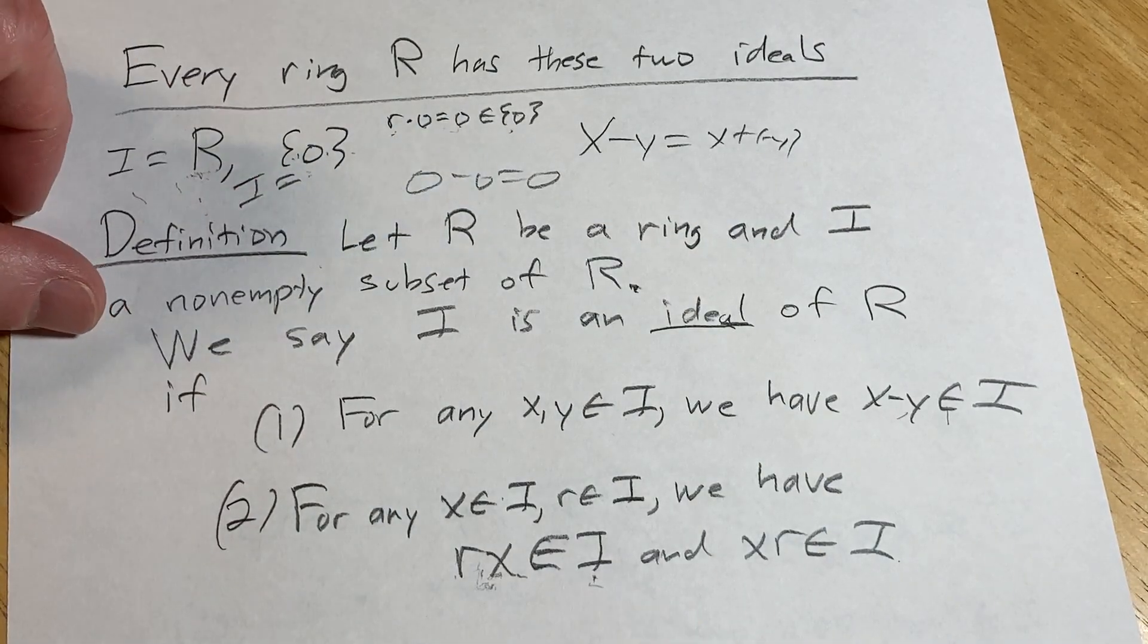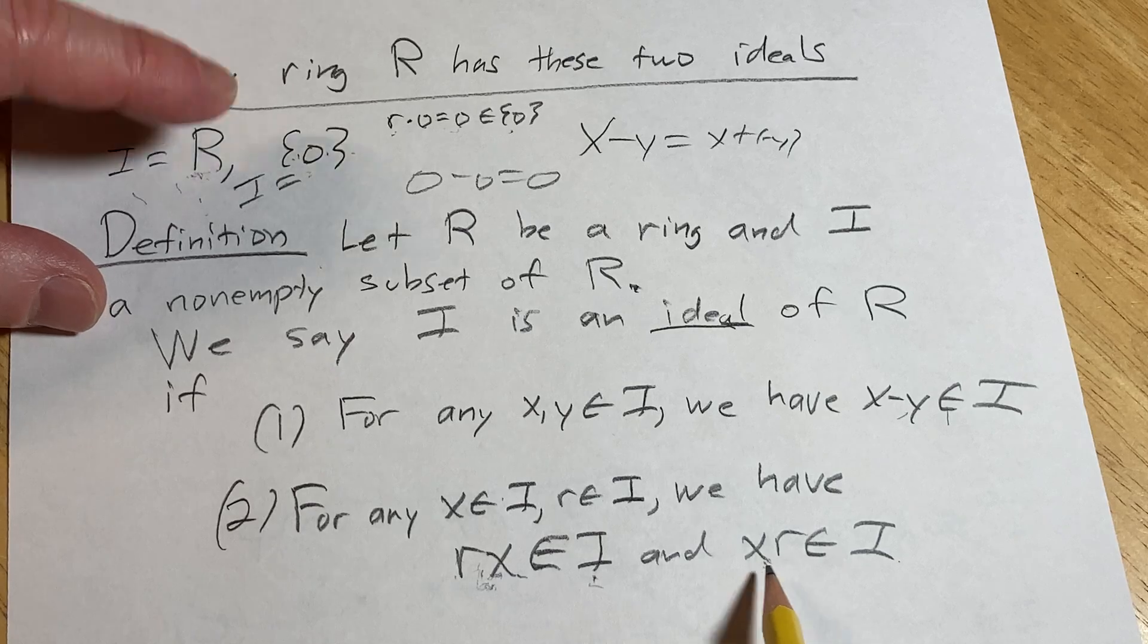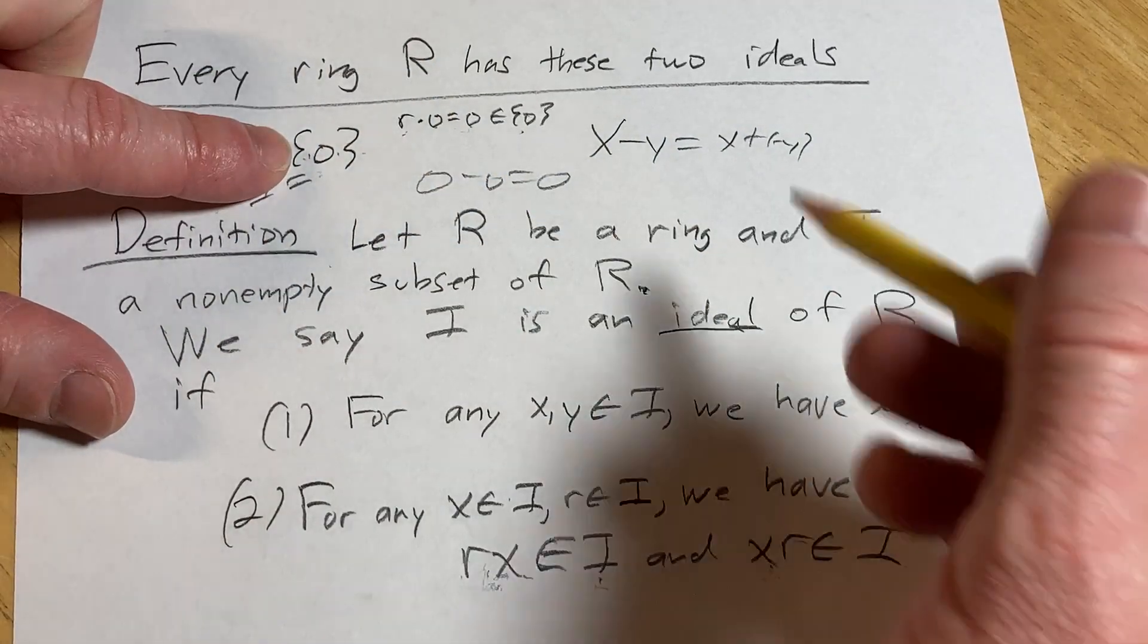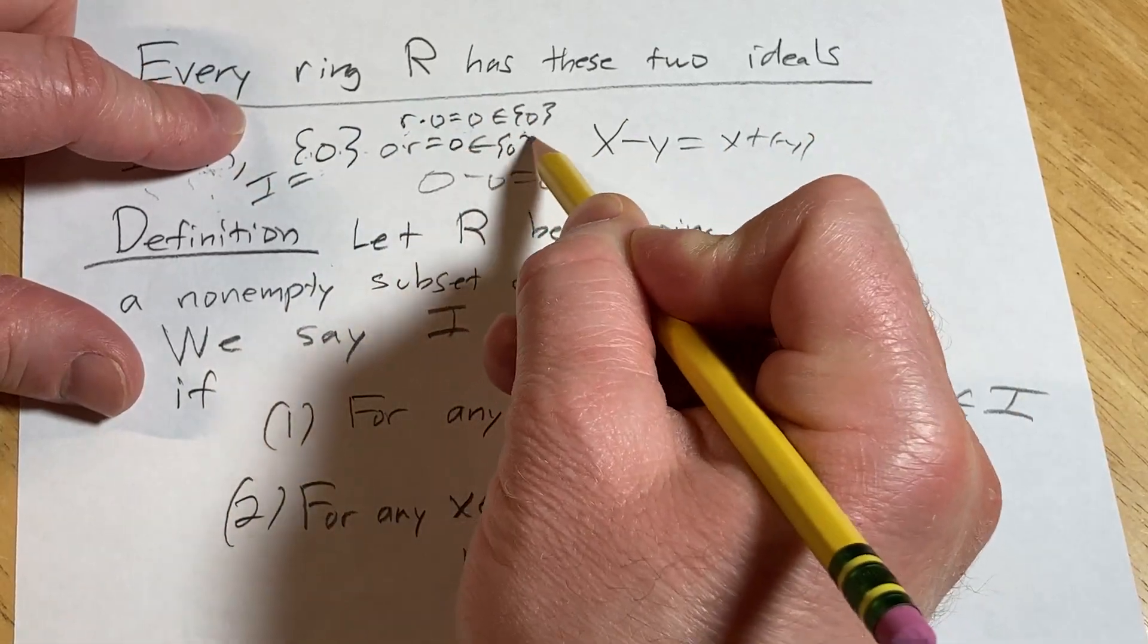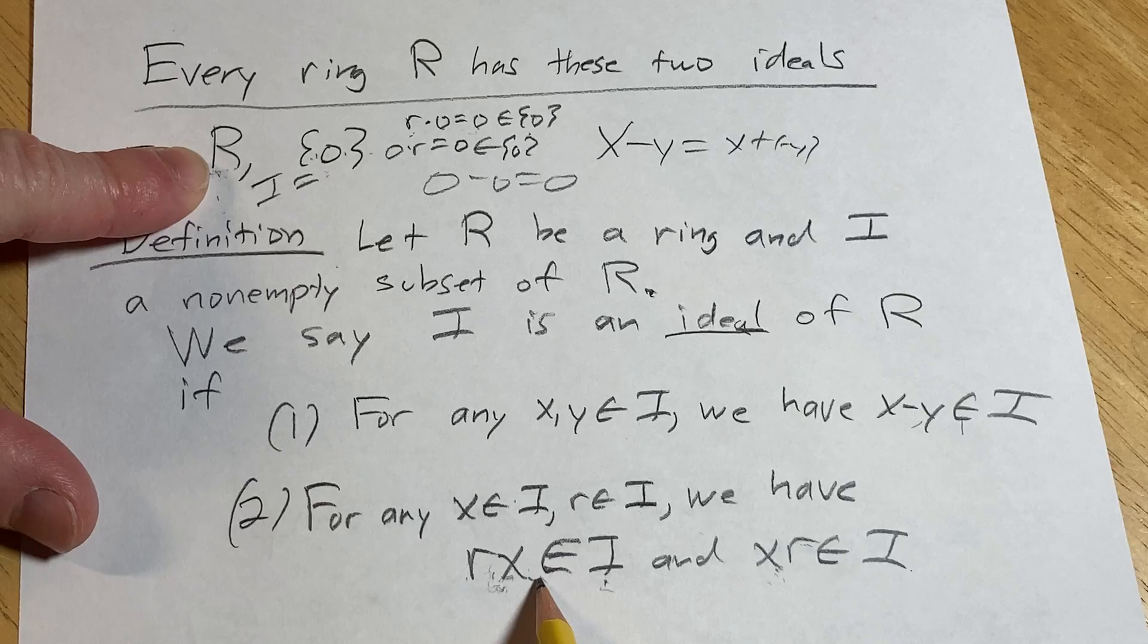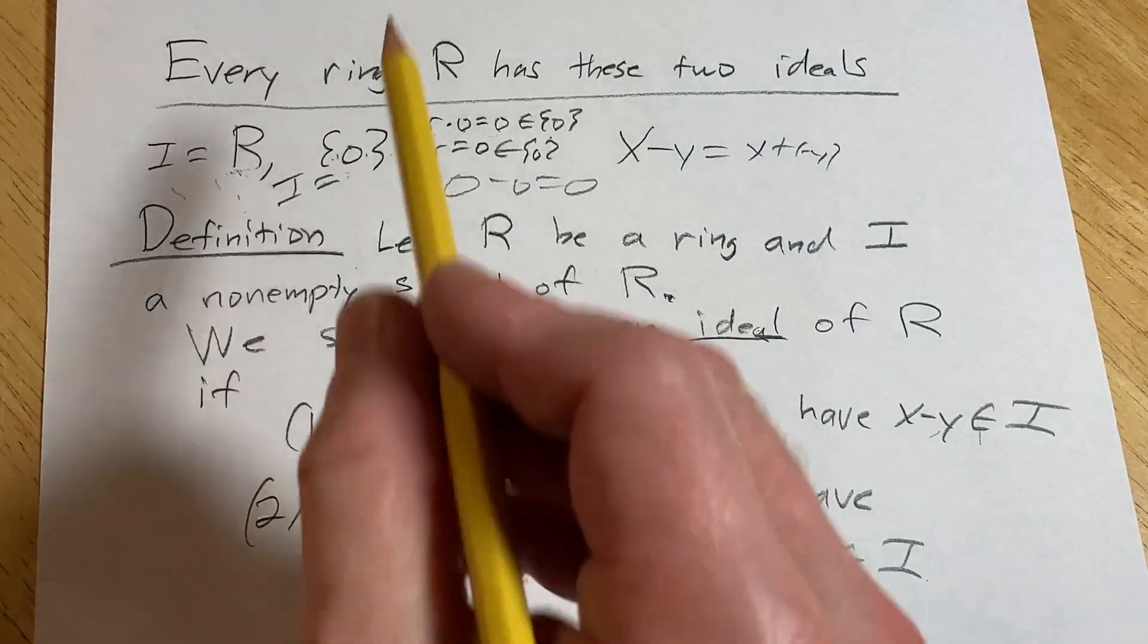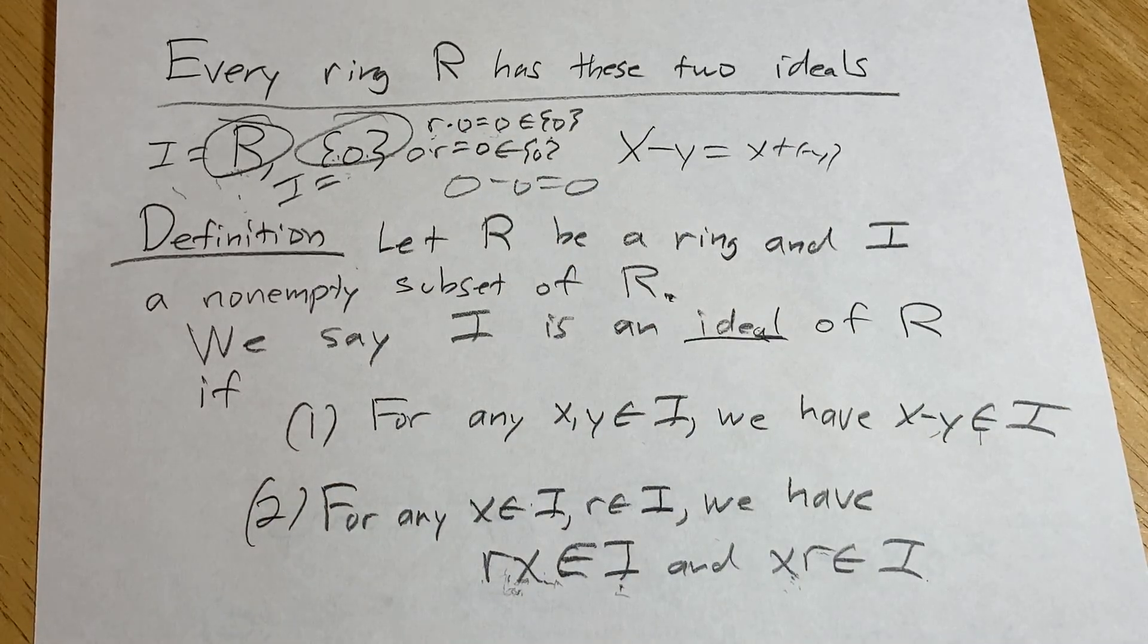So it works, so it's satisfied. And then same thing here. It's no big deal here with this situation, because it would just be zero times r, which is also zero, which is in this set. And for this case, it doesn't matter. So yeah, that's an example of two ideals, R and the zero ideal, that every single ring has.